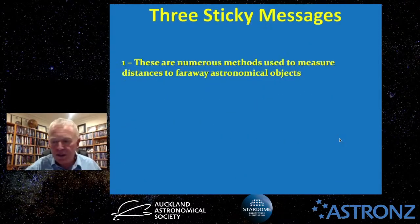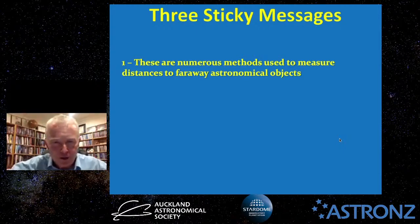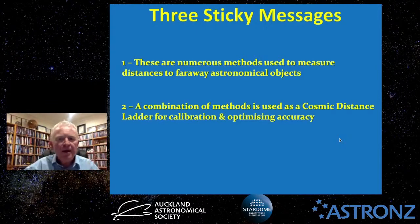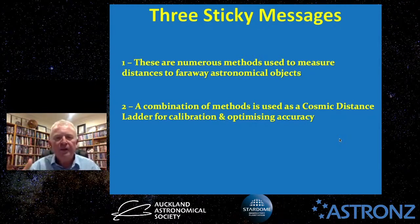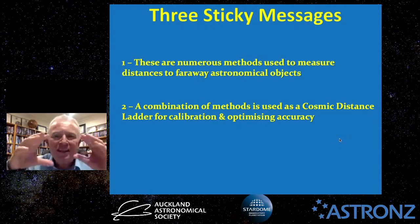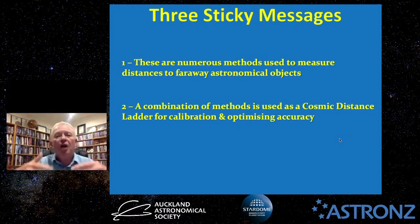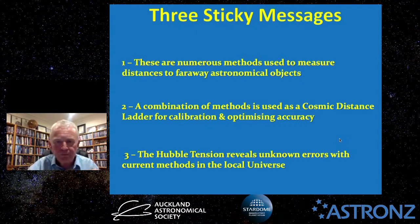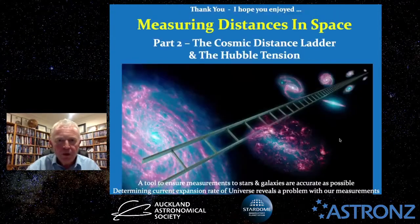Three sticky messages to take home: First, there are numerous methods used to measure distances to far-away astronomical objects, and no one method is perfect — they all have errors and limited ranges. Second, a combination of methods forms the cosmic distance ladder for calibration, optimising accuracy. Third, the Hubble tension reveals unknown errors with current methods in measuring distances in the local universe.